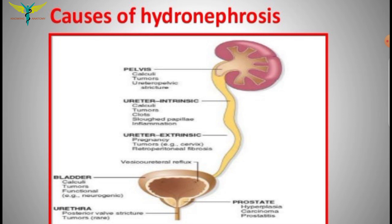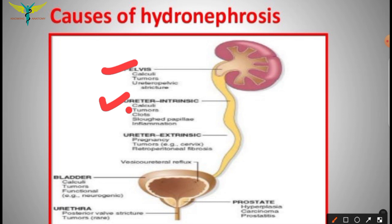The pelvis can be obstructed by calculi, tumors, ureteropelvic strictures, and the ureter itself. Intrinsic causes of the ureter include blockage of the inner walls by calculi, tumors, clots, sloughed papillae, and inflammation.